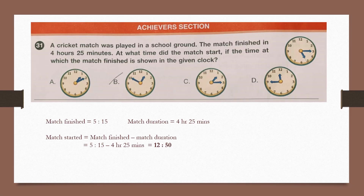Now we are in the Achievers section. Question number 31: A cricket match was played in a school ground. The match finished in 4 hours 25 minutes. At what time did the match start, if the clock shows it finished at 5:15? The match started 4 hours 25 minutes before 5:15, so we subtract to get 12:50. This clock shows 12:50. Our answer is option B.